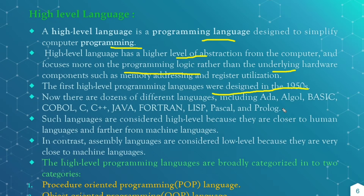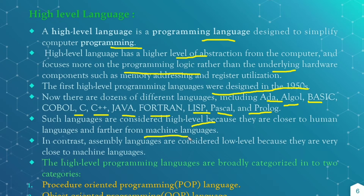Now we have many programming languages which include Ada, Algol, Basic, Cobol, C, C++, Java, Fortran, Lisp, Pascal, and Prolog. These are all high level programming languages. These are considered high level because they are closer to human language and further from the machine language. In contrast, assembly level language is considered a low level language because it is very close to the machine level language.